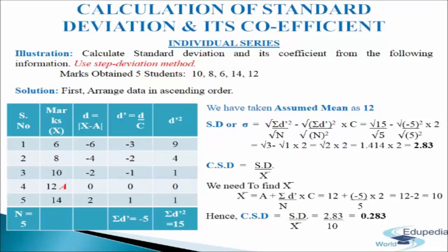After calculation we get SD = 2.83. For the coefficient of standard deviation: CSD = SD / mean. We find mean = a + (σd'/n) × c = 12 + (−5/5) × 2 = 10. So CSD = 2.83 / 10 = 0.283. Note that in all three methods — direct, shortcut, and step deviation — we get the same answer, so by using any formula you will get the same result.